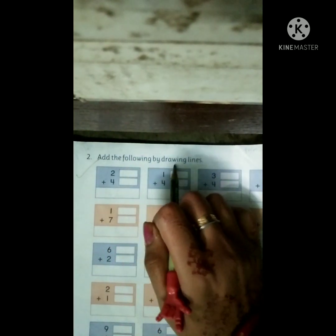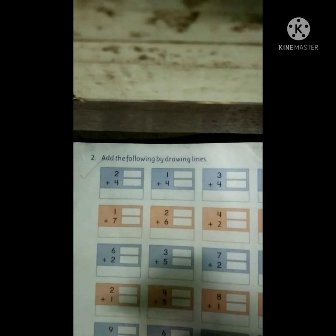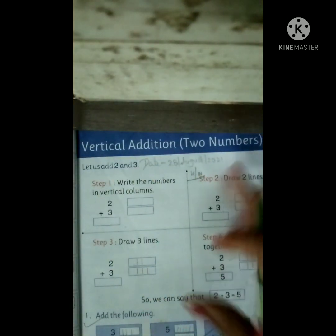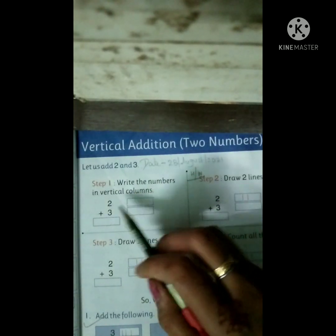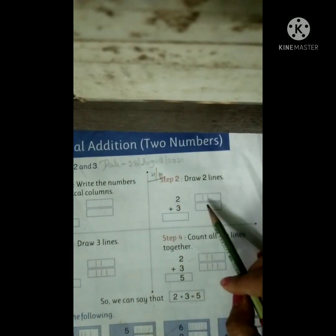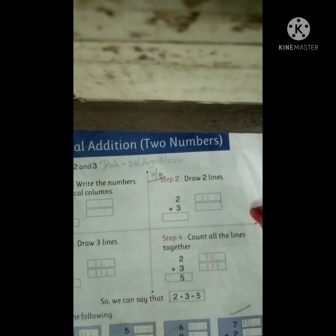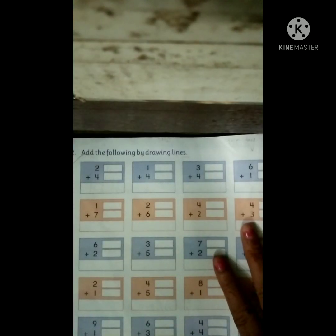Add the followings by drawing lines. In Pre-S class, we did this on the table. Turn your page — vertical addition of numbers. We write the numbers in vertical column, like this. Draw two lines. First, for the upper number, draw three lines; below that number, draw three lines. Count all the lines together and write the answer. So this work follows the same process.